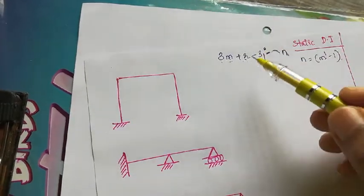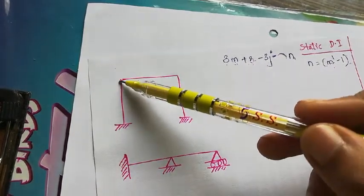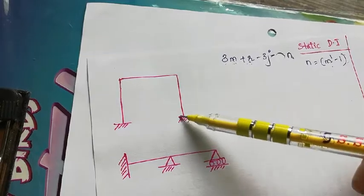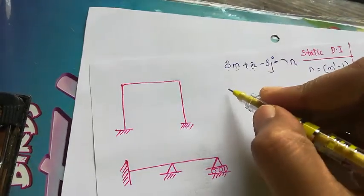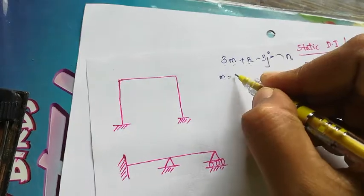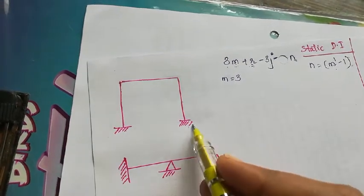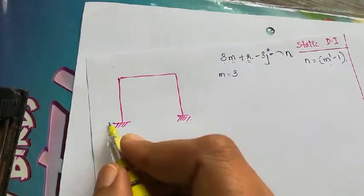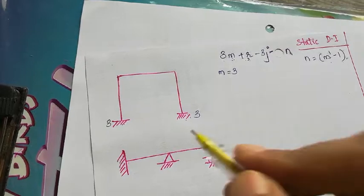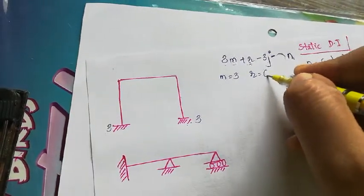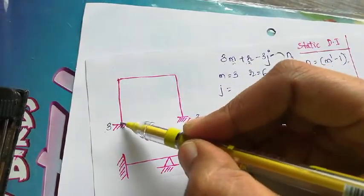Let us calculate m, r, and j. m means number of members: we have one vertical member, another vertical member, and one horizontal member, so m = 3. For reactions, each fixed support gives three reactions, and we have two fixed supports, so r = 6.